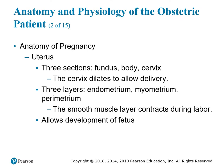The uterus has three sections: the fundus, the body, and the cervix. The cervix dilates to allow delivery. Three layers of the uterus are the endometrium, myometrium, and perimetrium. The endometrium is the most inner lining. The myometrium is the muscular layer. The perimetrium is the outside layer. The smooth muscle layer contracts during labor to allow expulsion of the fetus.